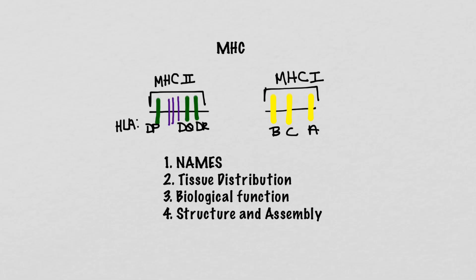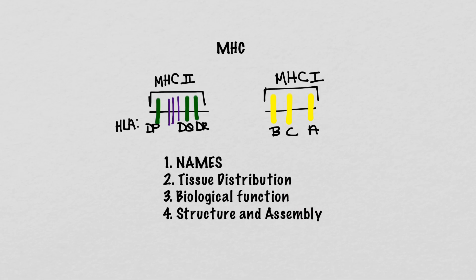What do you need to know about MHC class 1 and MHC class 2 molecules? You need to know their names — and by that I mean HLA. The genes are named MHC 1 and MHC 2, but the proteins they encode are human leukocyte antigens. They have distinctive names: DP, DQ, DR for MHC class 2, and A, B, and C for MHC class 1. You need to know their tissue distribution, which is very different for the two classes, and their biological function — each really only has one. If you know the tissue distribution, you can figure out the function. You also need to know a little about their structure; within classes, they all have the same structure and assembly.